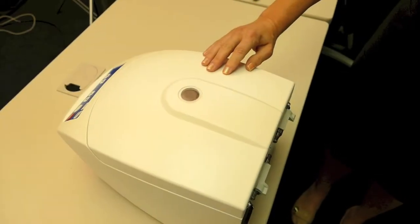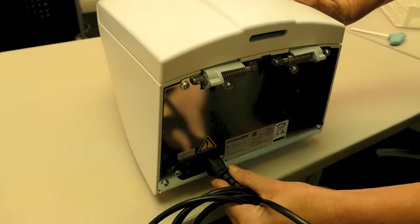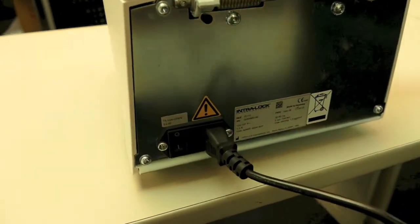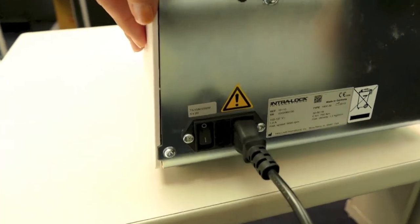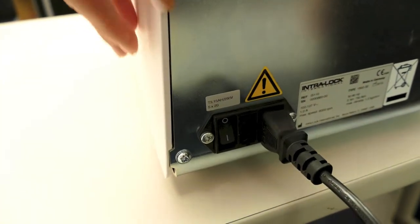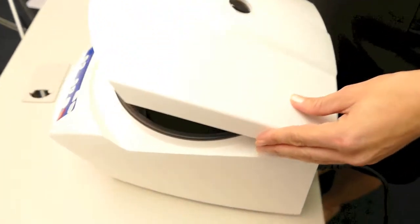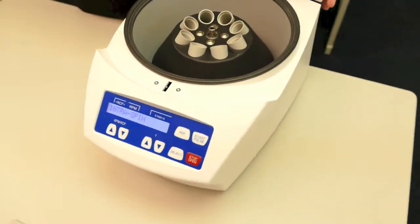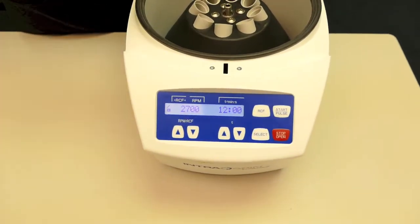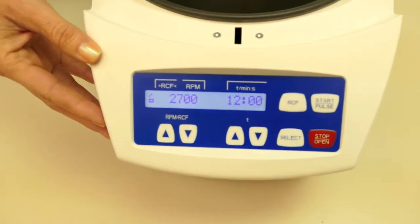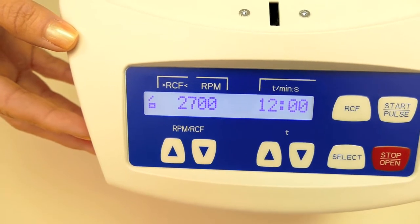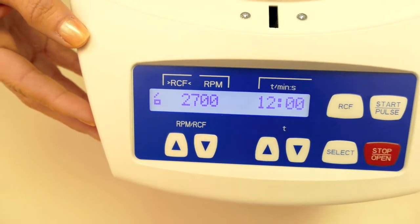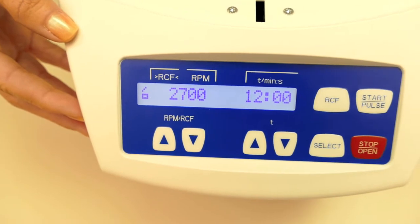Now let's review the IntraSpin centrifuge. We're going to insert the power cord and plug the unit in. The on-off switch is located to the left of the power cord. I'm going to turn that on, and the machine will open with power. Please note it is set for the LPRF protocol at 2700 RPMs and 12 minutes. Please consult your manual for more details regarding the display control settings.